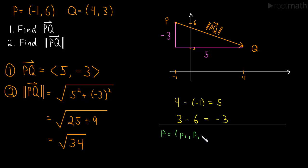Well, if you write P as equal to (p₁, p₂), so this is our point (p₁, p₂), and Q is equal to (q₁, q₂), so in our example p₁ was -1 and p₂ was 6, and q₁ was 4 and q₂ was 3.